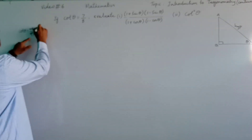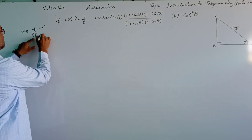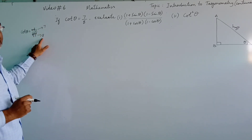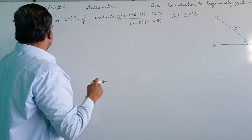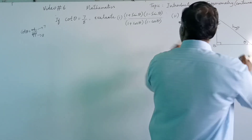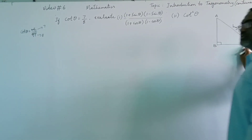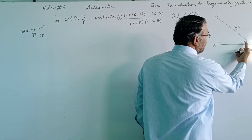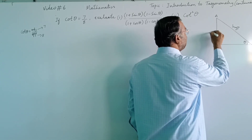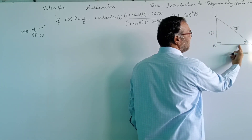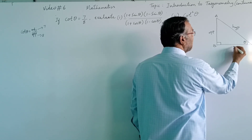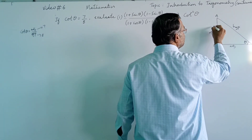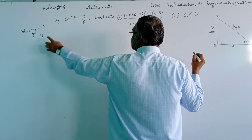Now as you can see, cot is adjacent, and the value is 7, and opposite is 8. So adjacent is 7 units and opposite is 8 units. Now, where is opposite and adjacent? We have theta here. If this is theta, then the side opposite to theta will be the opposite side, and the side adjacent to theta — that is next to theta, attached to theta — will be adjacent. So opposite is 8 units and adjacent is 7 units.